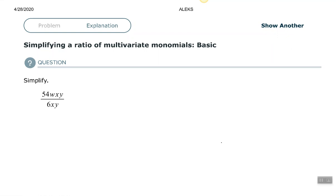Hey, good people. Arthur Morris here. I hope all is well. In this video, we're going to look at simplifying a ratio of multivariate monomials, and we just want to simplify here.